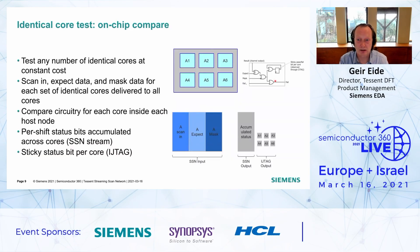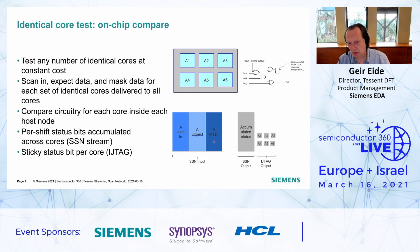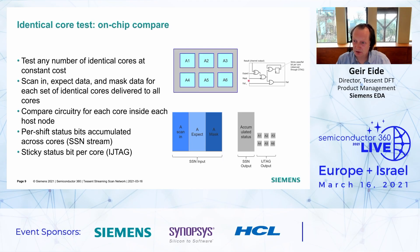The last capability I want to touch on is SSN's handling of identical cores. With identical cores, we have the option to add on-chip compare circuitry as part of the SSN nodes inside each core. Rather than just shifting in scan input data through the SSN bus, we shift in the scan input data, the expected data, and mask data per core. This amount of data is the same regardless of whether you have six identical cores or a thousand, because one set of input, expected, and mask data covers any number of identical cores. The on-chip compare circuitry does the comparison locally, and we shift out accumulated status for all cores plus individual pass/fail flags per core. This can significantly reduce overall test time and test data volume for designs with identical cores.